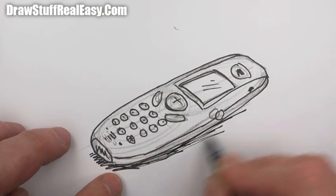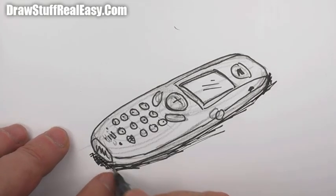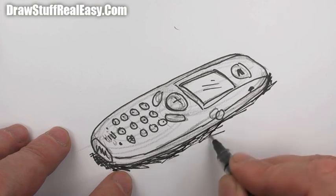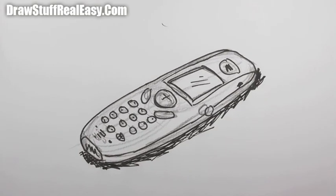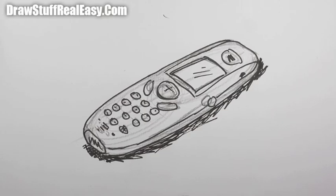Two minutes 32, that's a long one. There we go, how to draw a cordless phone, the kind you find around your house, not in your pocket. This has been Shoo Rayner on Draw Stuff Real Easy. Keep drawing, drawing, drawing, practice, practice, practice. I'll see you next time. Take care now, bye!